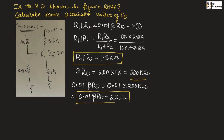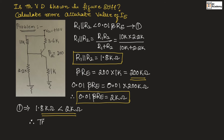Substituting these two values in equation number 1, we get 1.8 kilo ohm is less than 2 kilo ohm. Hence, this satisfies the condition for stiff voltage divider. Therefore, we can say the voltage divider bias given in the circuit is stiff.